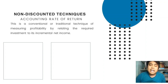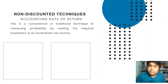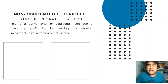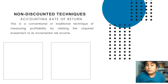So ARR was not introduced by capital budgeting — it was adapted by capital budgeting from traditional accounting. ARR is similar to return on asset and return on investment in traditional accounting. For example, return on asset is net income over asset, and return on investment is net income over investment.